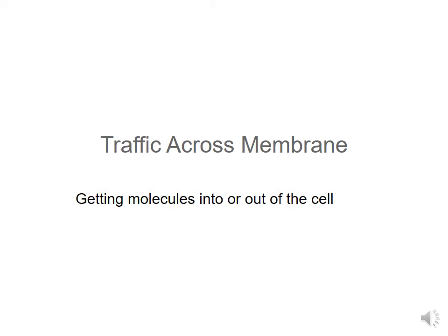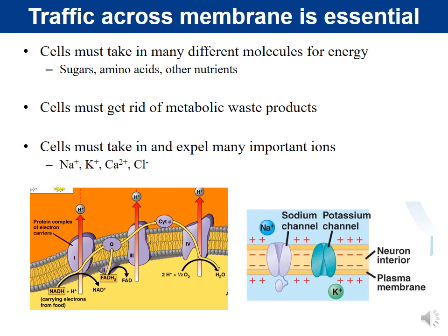Traffic across the membrane is essential — cells need to take in molecules for energy. We're not plants; we can't make our own energy, so our cells take in sugars, amino acids, and other nutrients. Cells also need to expel metabolic waste products — like breathing, where you breathe in oxygen and exhale carbon dioxide, a waste product of cellular respiration.